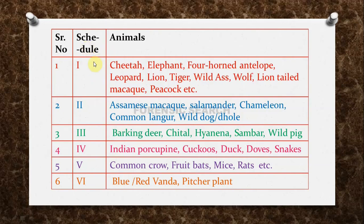Schedule 1 covers endangered species such as cheetah, Indian elephant, four-horned antelope, leopard, lion, tiger, wild ass, wolf, lion-tailed macaque, and peacock. Schedule 2 contains highly protected animals like Assamese macaque, salamander, chameleon, common langur, and wild dog or dhole. Schedule 3 animals include barking deer, cheetah, hyena, sambar, and wild pig — these are not endangered animals.